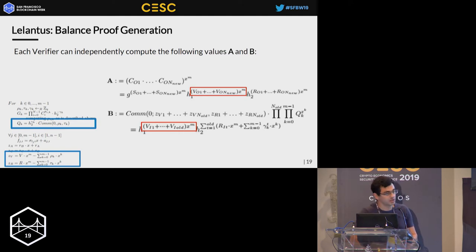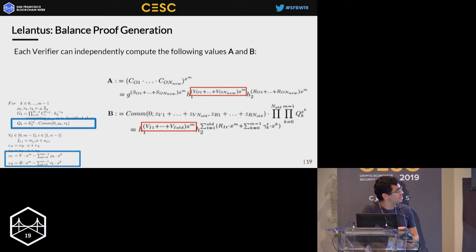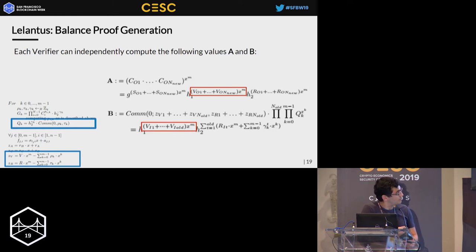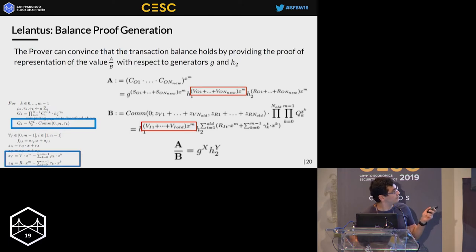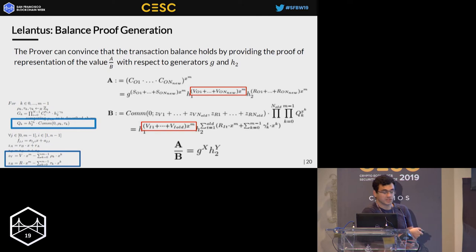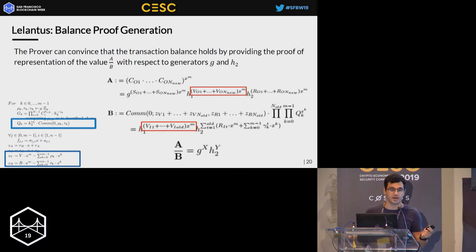Having this information, it's easy to generate the balance proof. All network participants can compute two values, A and B: A is the product of all output coins, encoding the sum of all output coins as a double-blinded commitment; and B is computed by committing to the sum of zv and zr, using elements Q to cancel the noise. When the transaction balance is preserved, computing A over B causes the H1 terms to cancel each other, and the prover only needs to generate a Schnorr proof of correct representation of this value with respect to generators G and H2.